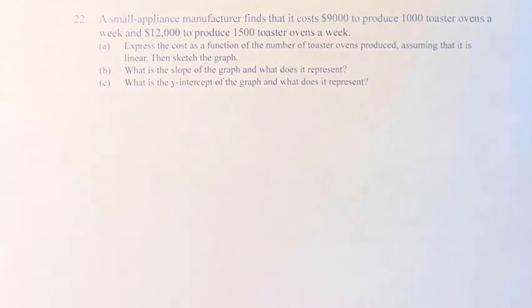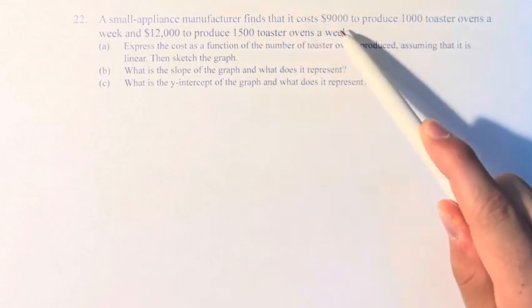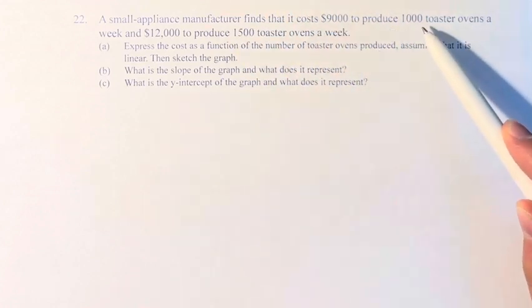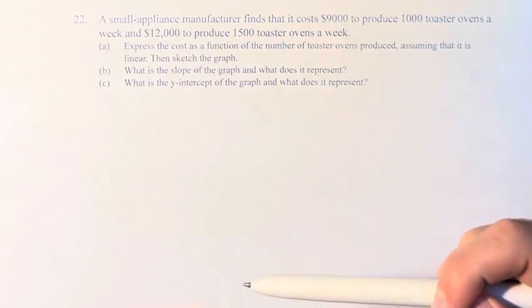Hello and welcome back to another video. In this problem, we're told that a small appliance manufacturer finds that it costs $9,000 to produce 1,000 toaster ovens a week, and $12,000 to produce 1,500 toaster ovens a week.